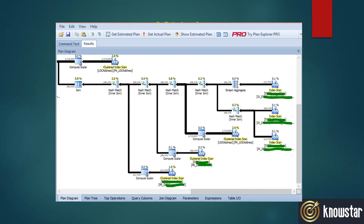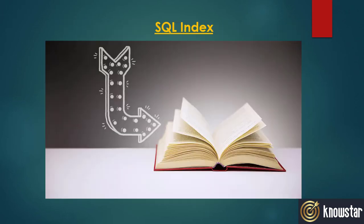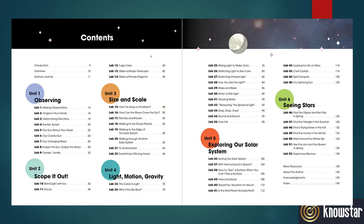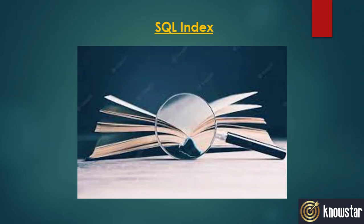Indexes are created to speed up retrieval of rows while fetching data through a SQL query from the table or view. The perfect analogy here is that of a physical book. The table of contents at the beginning of the book tells us on which page we can find information about a specific topic. If the index did not exist, we would be going through each and every page of the book to find the specific information we were looking for — a very time-consuming and tedious process.